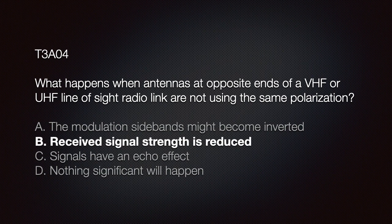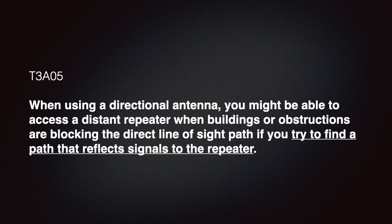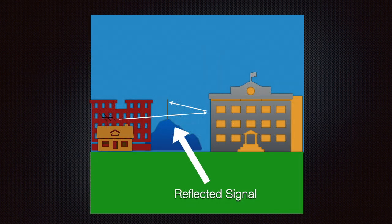We should know that when using a directional antenna, you might be able to access a distant repeater even when buildings or obstructions are blocking the direct line-of-sight path, if you try to find a path that reflects the signal to the repeater. This slide shows our QTH or home location with a building blocking our radio waves from the repeater tower in the distance; however, we can access the repeater by bouncing our signal off a building surface.